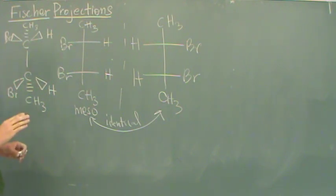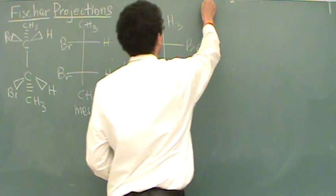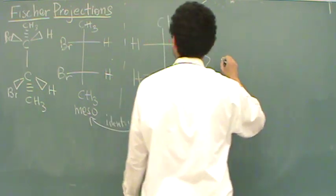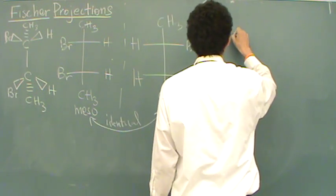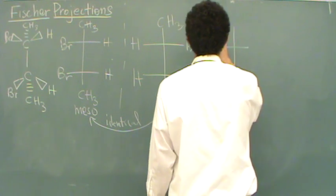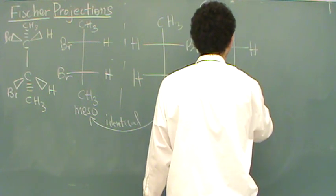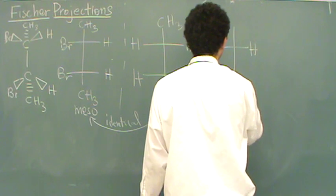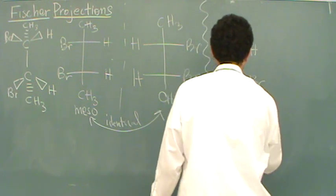You can draw what's called a diastereomer of this. I'll draw it over here. If I just flip, invert one of the bonds,